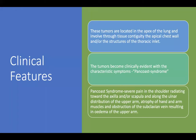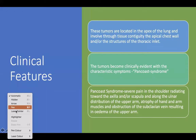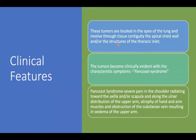These tumors have gained importance because of their unique clinical features. They are located at the apex of the lung — the top of the right or left lung — and involve various apical tissues and structures of the thoracic outlet. These tumors become clinically evident with characteristic symptoms known as Pancoast syndrome, which involves classical involvement of the brachial plexus. There is severe pain in the shoulder radiating towards the axilla or scapula, pain in the distribution of the ulnar nerve, atrophy of hand and arm muscles, and obstruction of the subclavian vein resulting in edema of the upper arm.